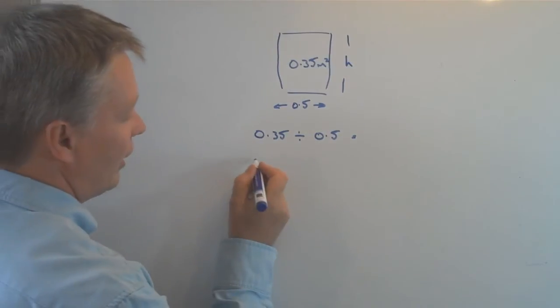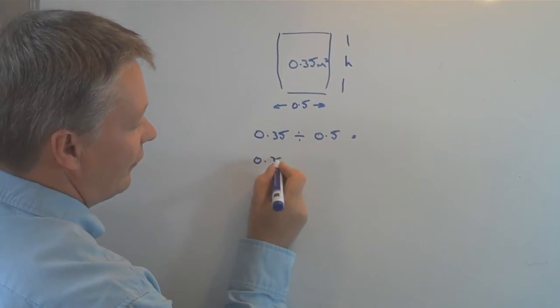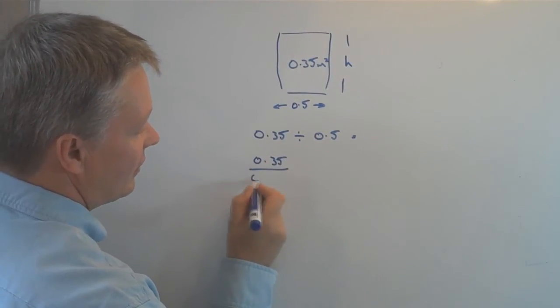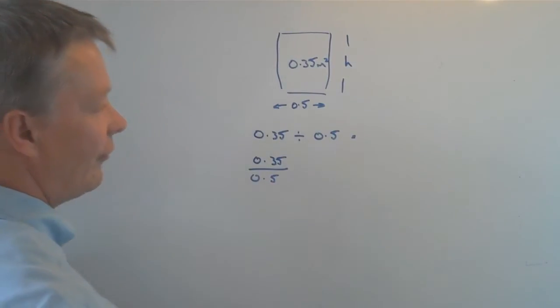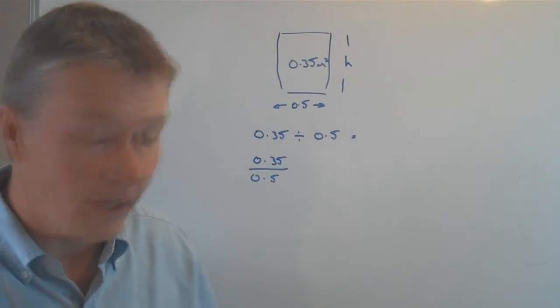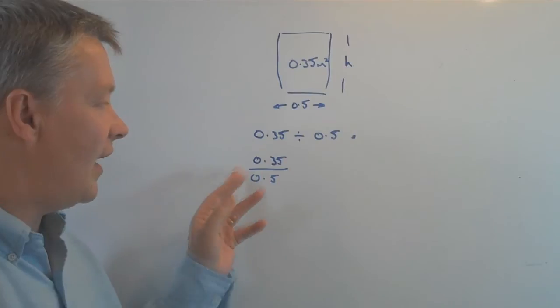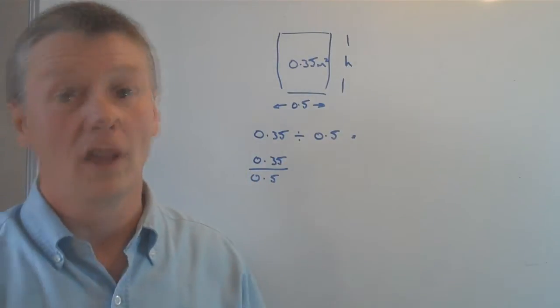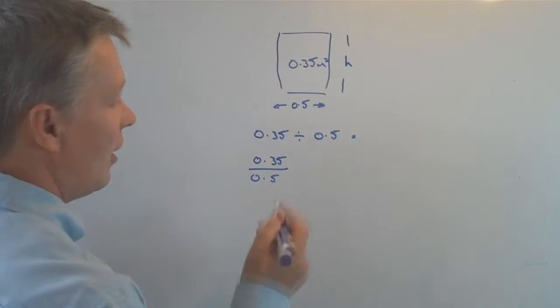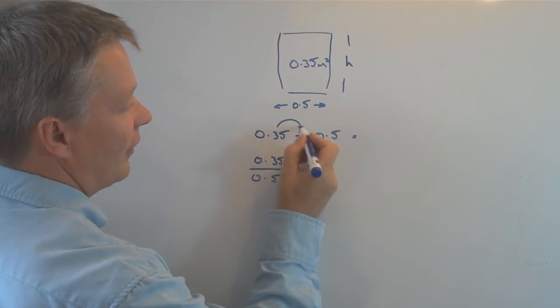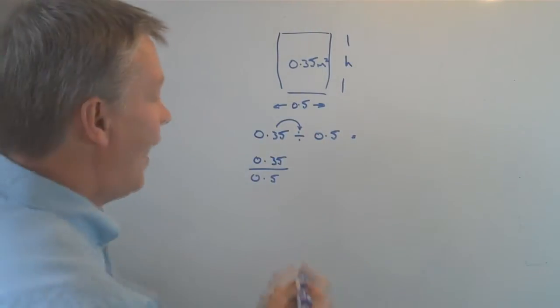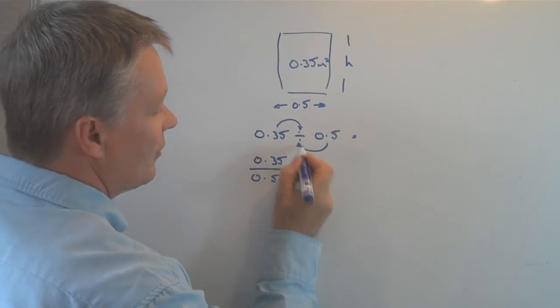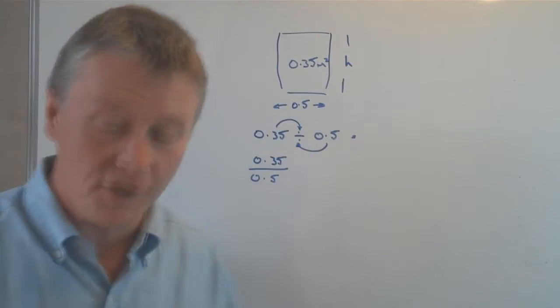If you look at some of the other videos, it'll show you that this is exactly the same as writing the line with the two dots, because 0.35 goes on the top and 0.5 goes on the bottom. I really haven't changed anything; I've just rewritten it in a format which is a little bit easier to work with.